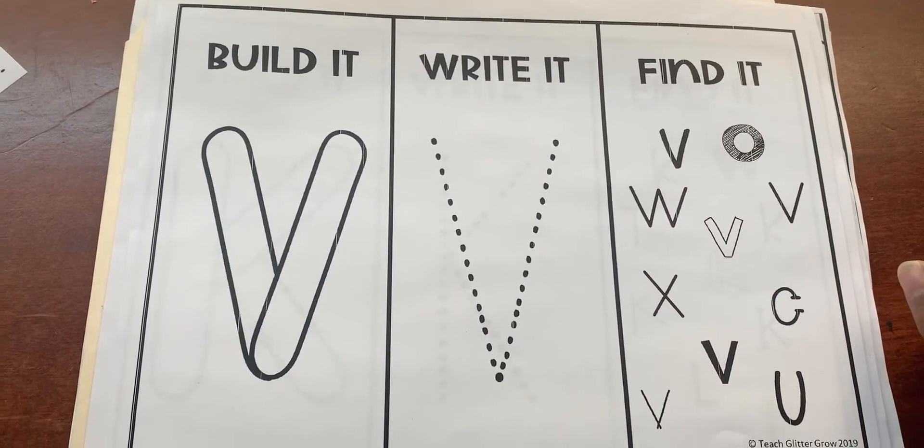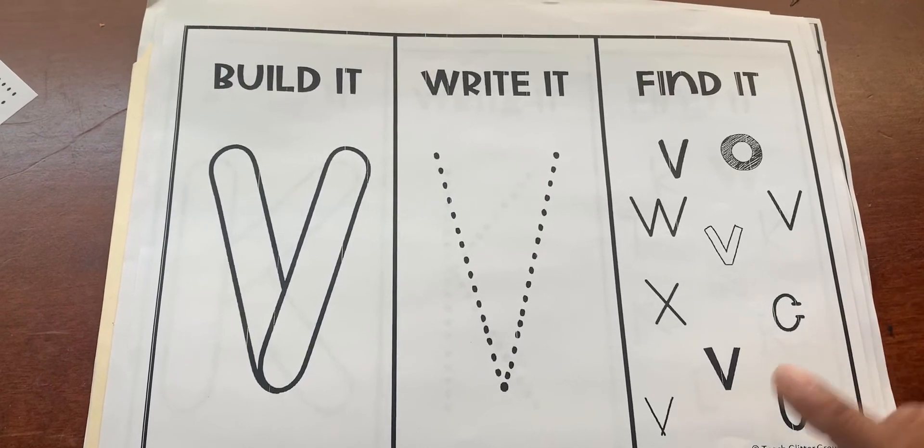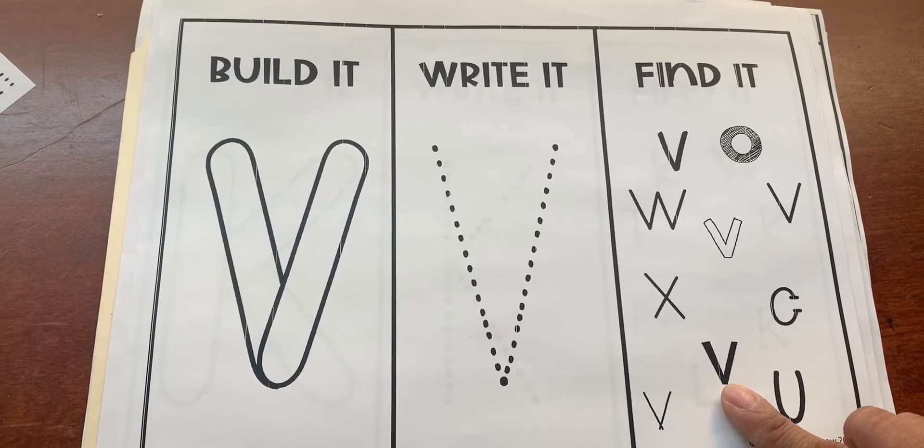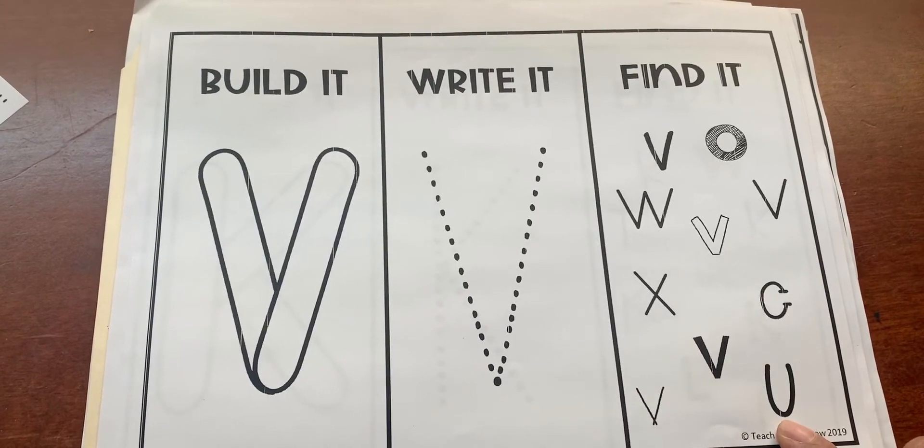So depending on if they're working on receptive letter ID or expressive, you can point to and be like, what letter is this? They say V. What letter is this? They would say U.